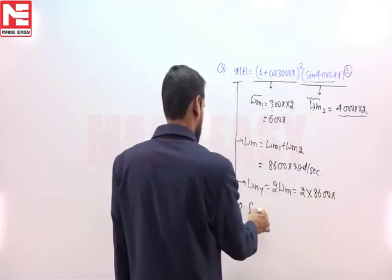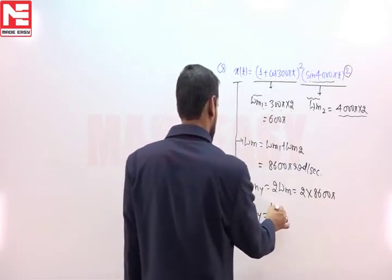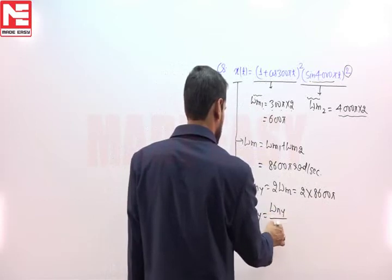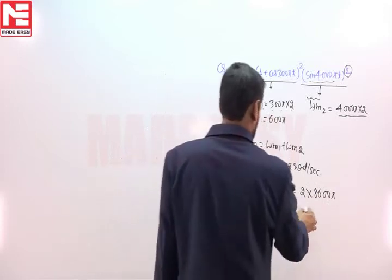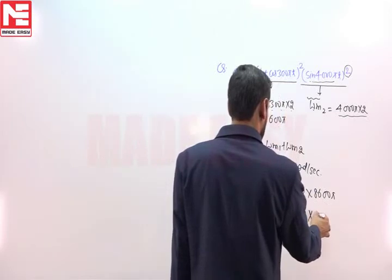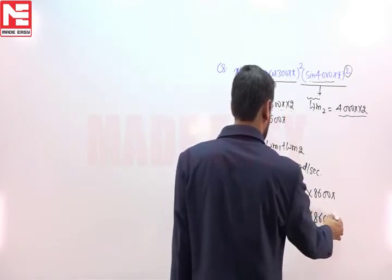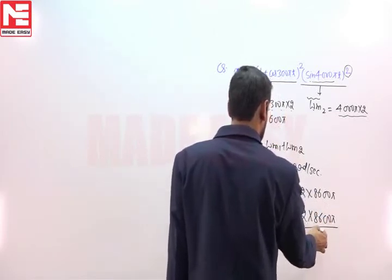Now, we have to obtain Nyquist rate in hertz. So we will divide omega Nyquist by 2π. It would be equal to 2 times 8600π divided by 2π.